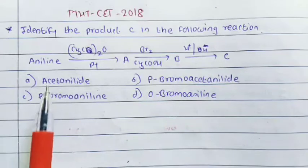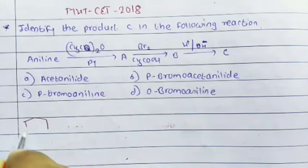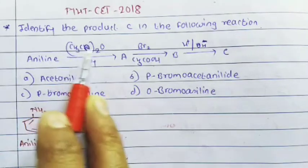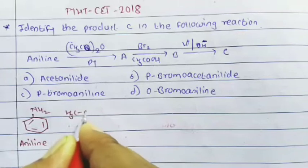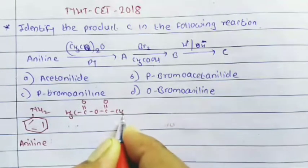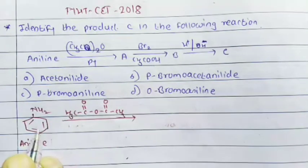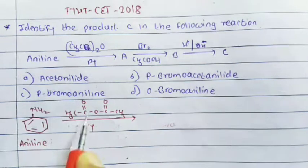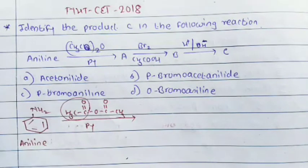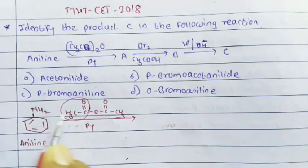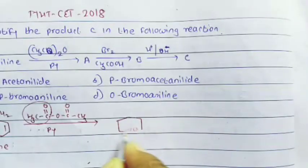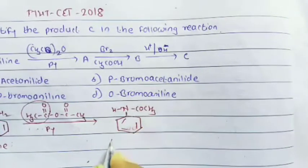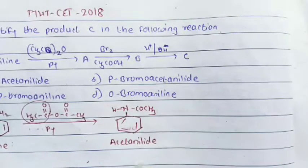In this reaction, aniline first reacts with acetic anhydride in presence of pyridine. Aniline is converted into acetanilide — the COCH3 group from acetic anhydride is added to the nitrogen atom. One hydrogen on the nitrogen atom is replaced by this COCH3 group, giving us acetanilide. This is our product A.